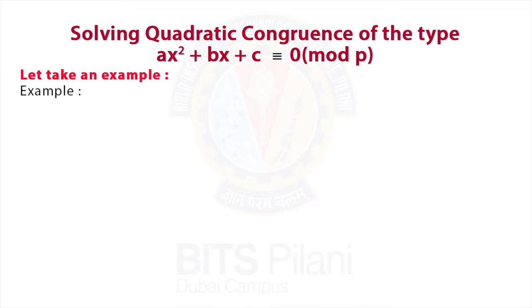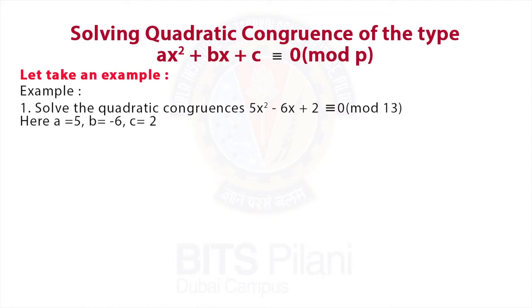2ax + b will be 10x - 6, and b² - 4ac will be, on substituting the values of a, b and c, equal to -4.